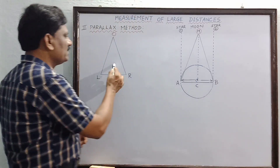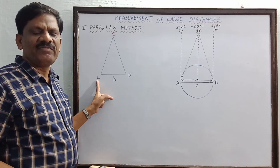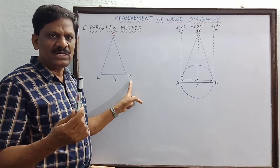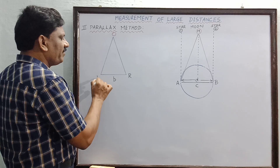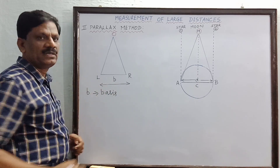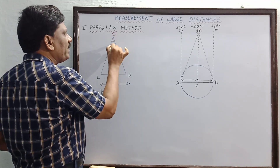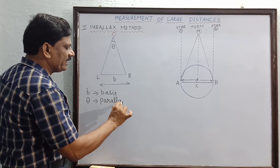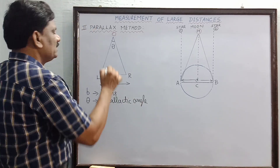In this picture, O is the observer. L is the position of the pen when viewed through the left eye, and R is the position of the same pen on the wall when observed through the right eye. The distance between the two positions L and R is called the basis B. The angle subtended by the two positions of the pen at the observer is called the parallax angle or parallactic angle.